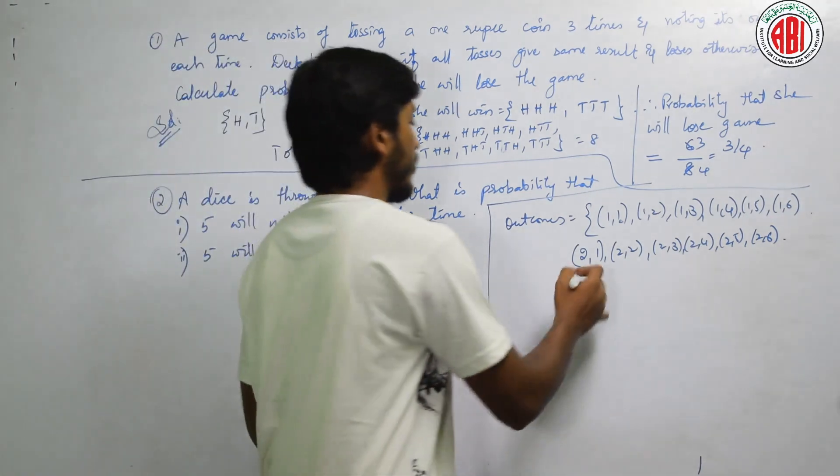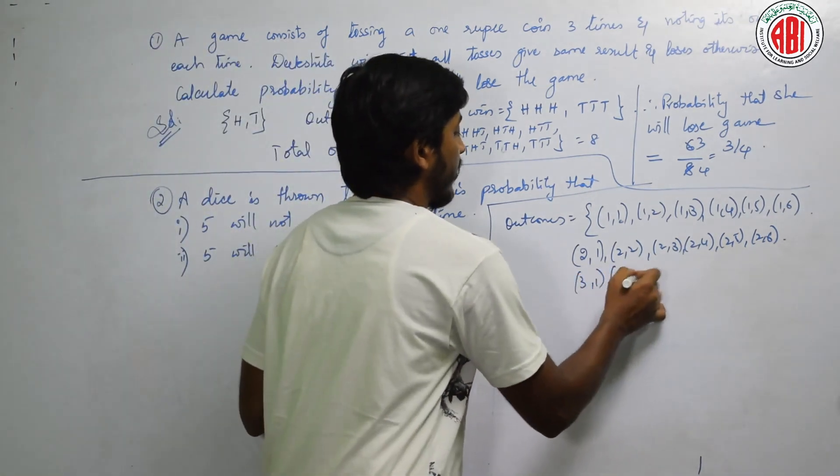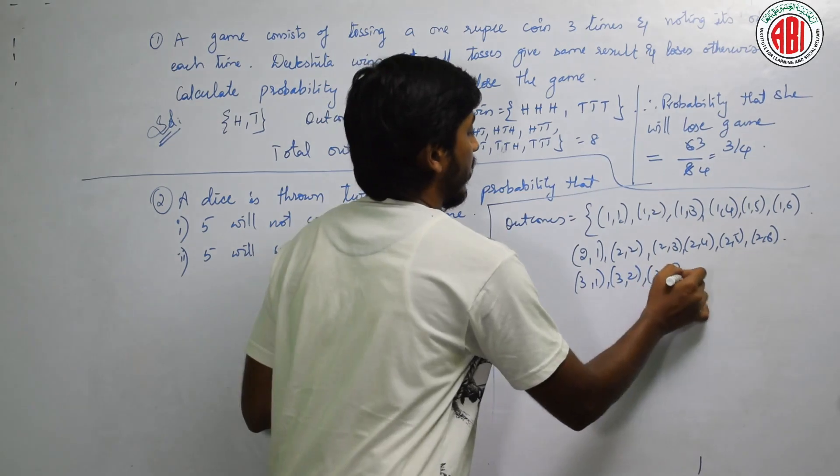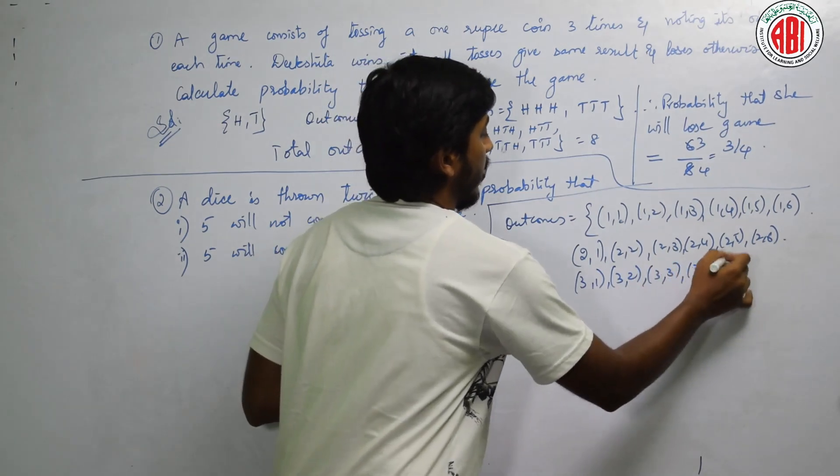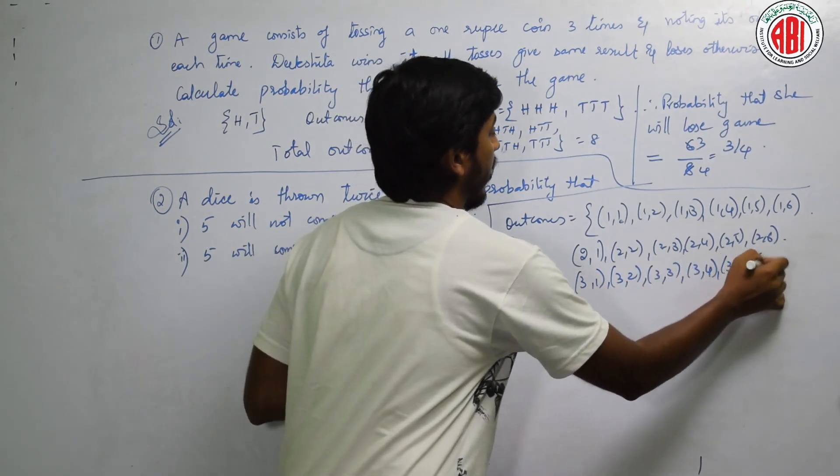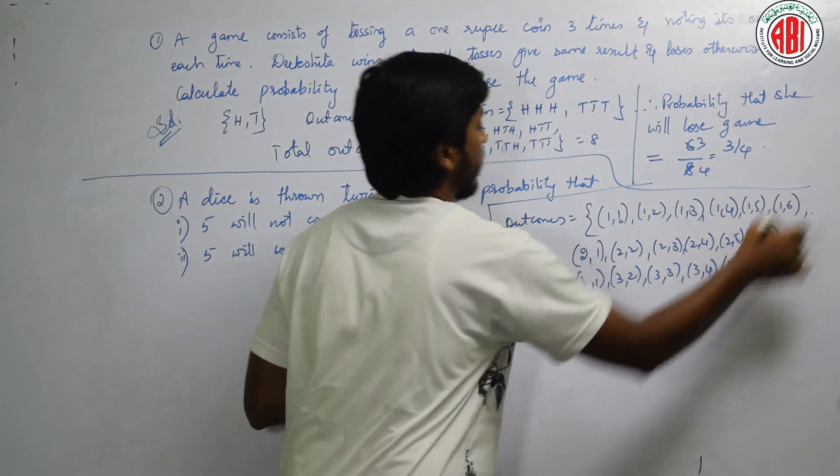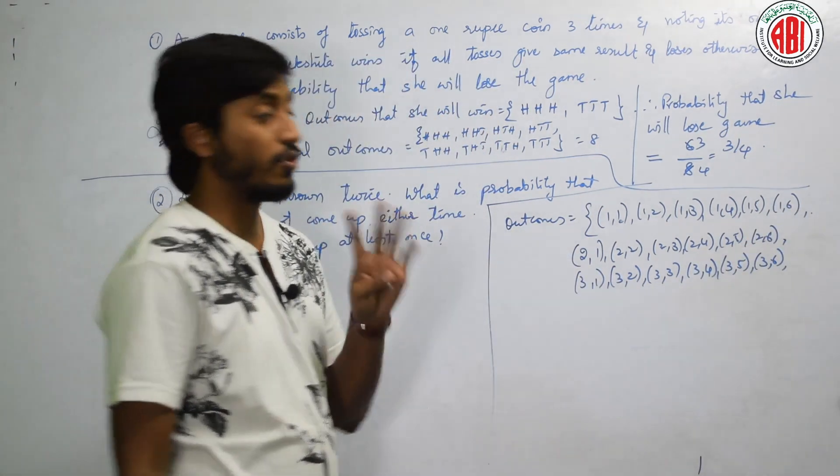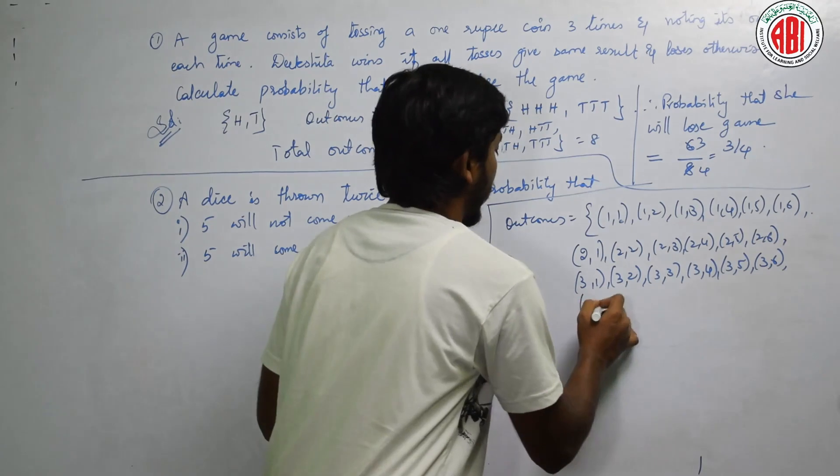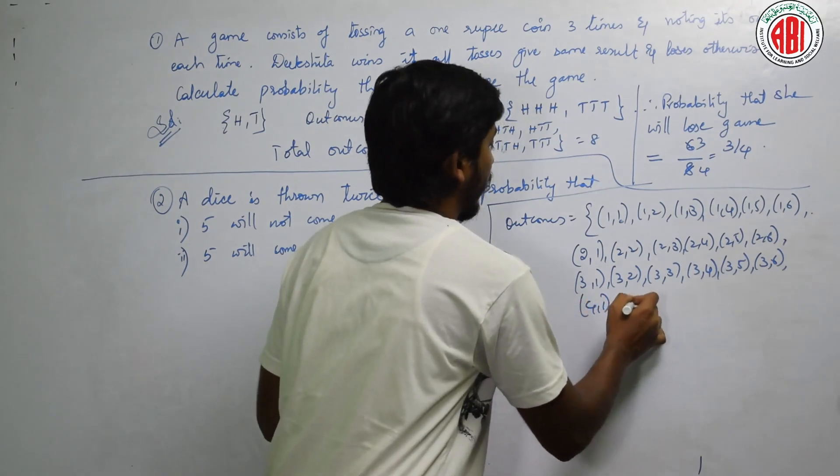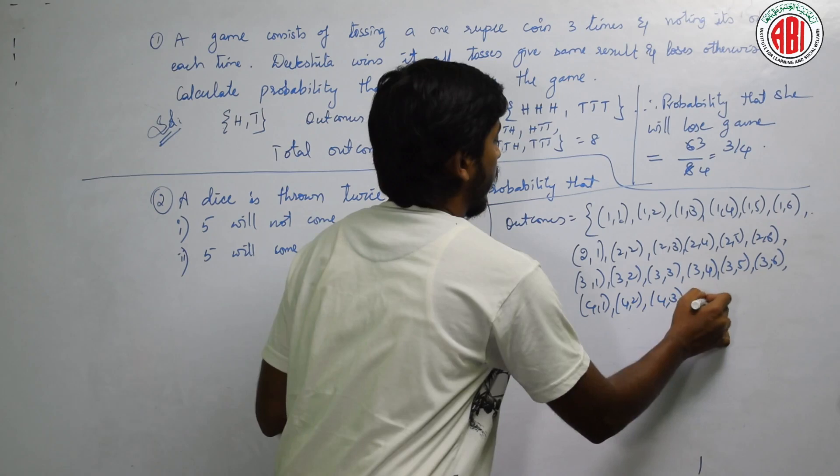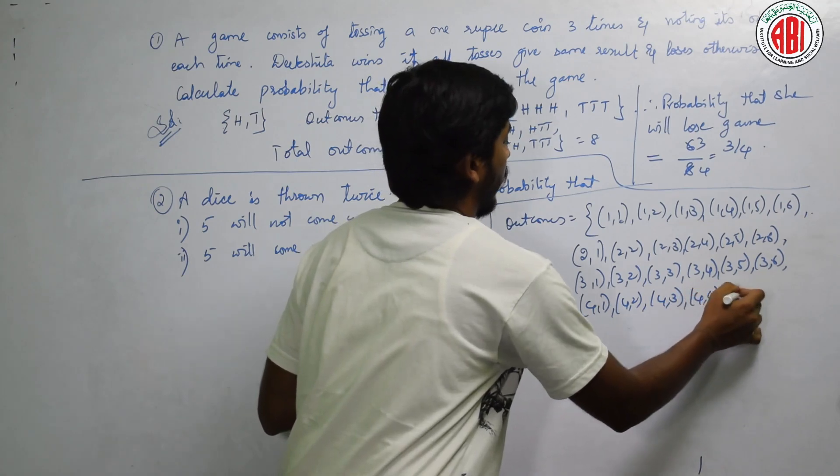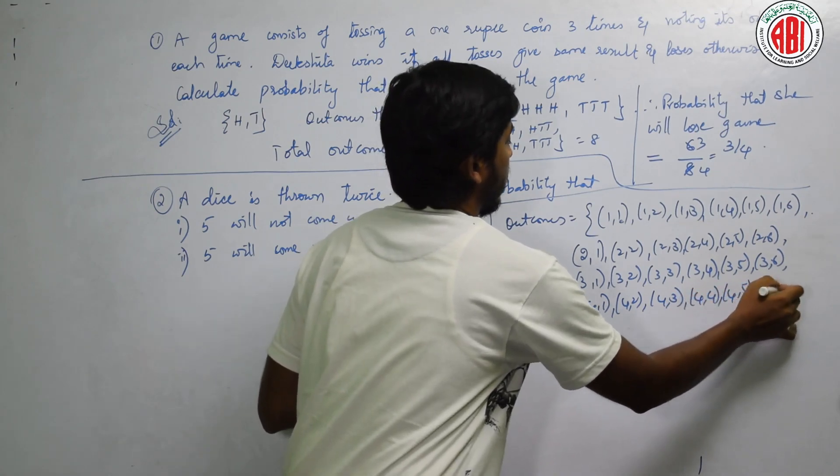Similarly, if first die shows 3, the second can be 3,2, 3,3, 3,4, 3,5, or 3,6. And if first die shows 4, the second can be 4,1, 4,2, 4,3, 4,4, 4,5, 4,6.